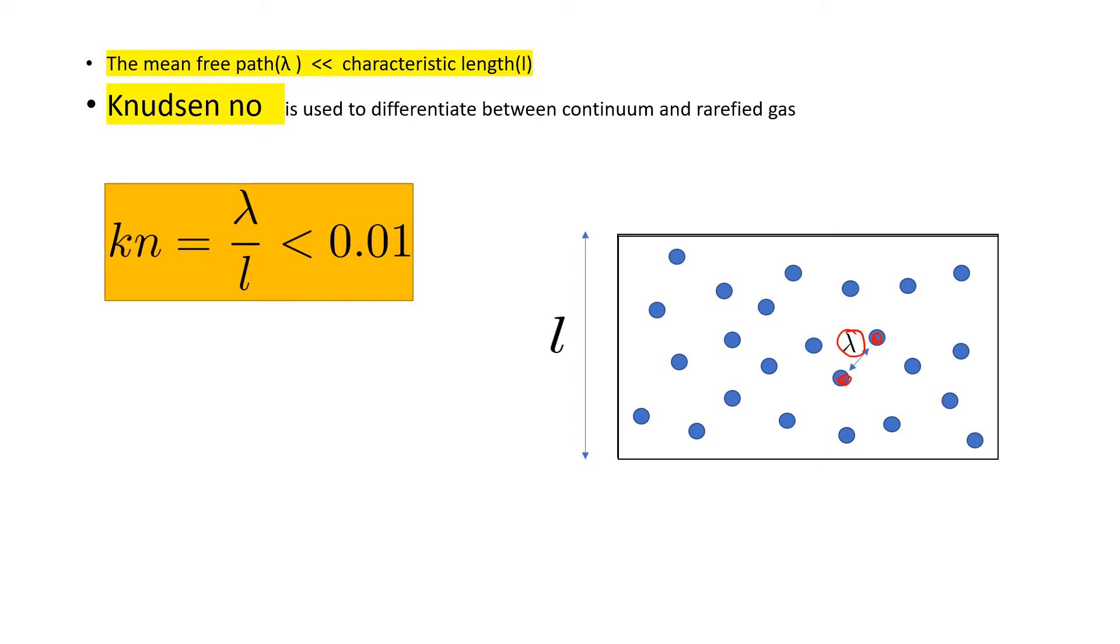The Knudsen number is defined as the ratio of mean free path by the characteristic length. If Knudsen number is less than 0.01, the continuum model applies.